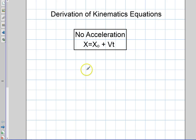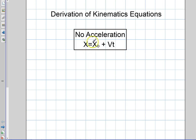Welcome to this video. In this video I'm going to talk to you about a very basic derivation of kinematics equations. I'm going to be dealing with a situation that has no acceleration, and we're going to be looking for the position function as a function of time. That's going to basically give us this equation here: the final position is going to equal initial position plus velocity times time.